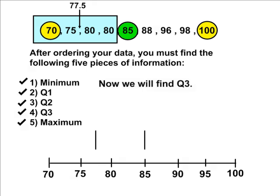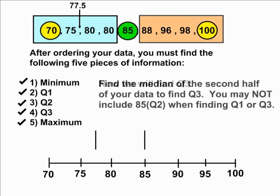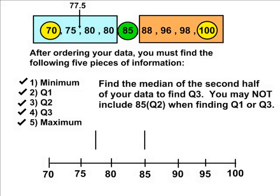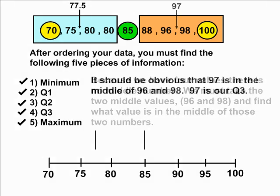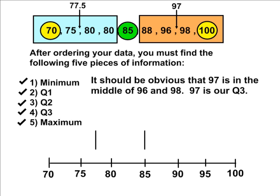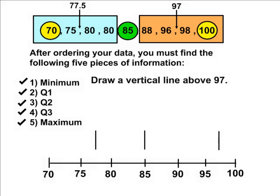Next, we are going to locate Q3. To find Q3, simply take all of the data after your median of 85 and locate the middle value. Once again, we have four pieces of data, which is an even number, so we have two middle values — in this case, 96 and 98. The value directly in the middle of 96 and 98 is 97, so 97 is Q3. Draw a vertical line directly above 97 on your number line, which establishes where the fourth quartile starts and where the third quartile ends.